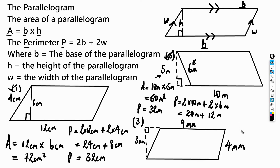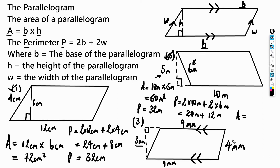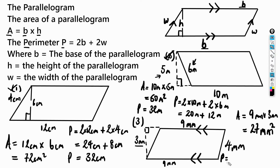For the third question, the perpendicular height is 3 millimeters and the base is 9 millimeters. Even though the base is written at the top, these sides are perpendicular so the distance is the same. The area equals 9 mm × 3 mm = 27 millimeters squared.